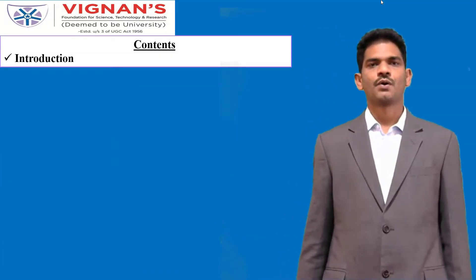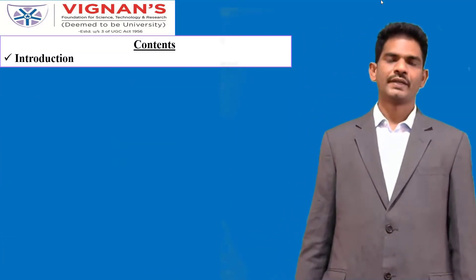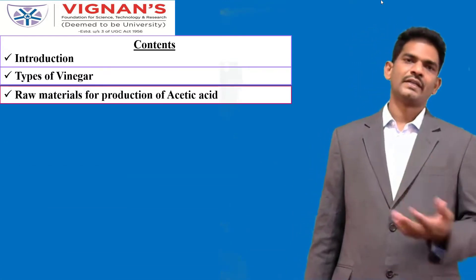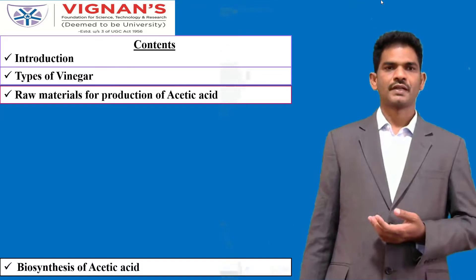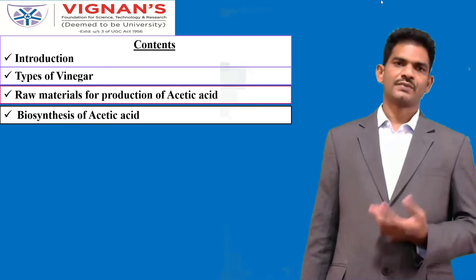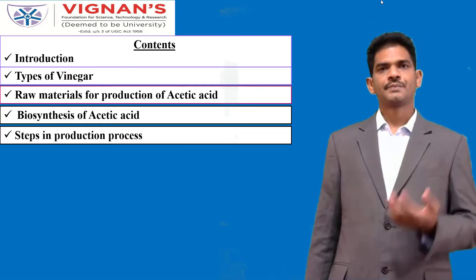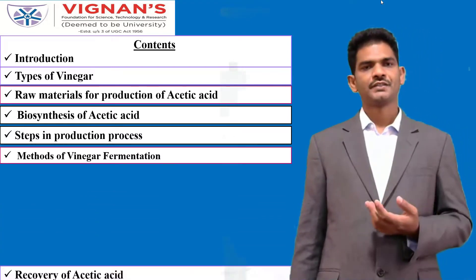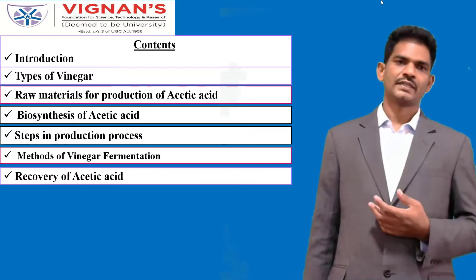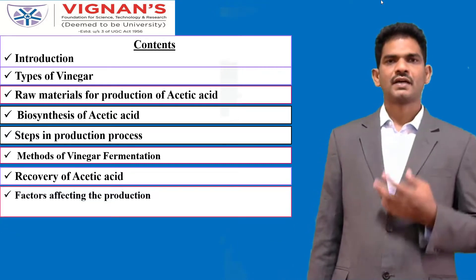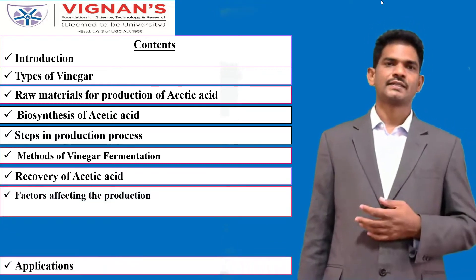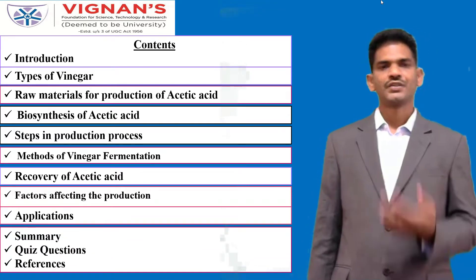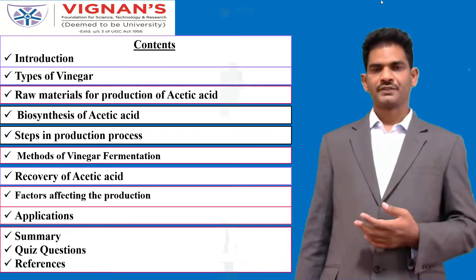The contents of this topic include: Introduction about Vinegar, Types of Vinegar and Raw Materials Required for Vinegar Production, Biosynthesis of Acetic Acid, Steps in Production Process and Methods of Vinegar Fermentation, Recovery of Acetic Acid, Factors Affecting the Production of Acetic Acid, Applications, Summary, Twist Questions, and References.